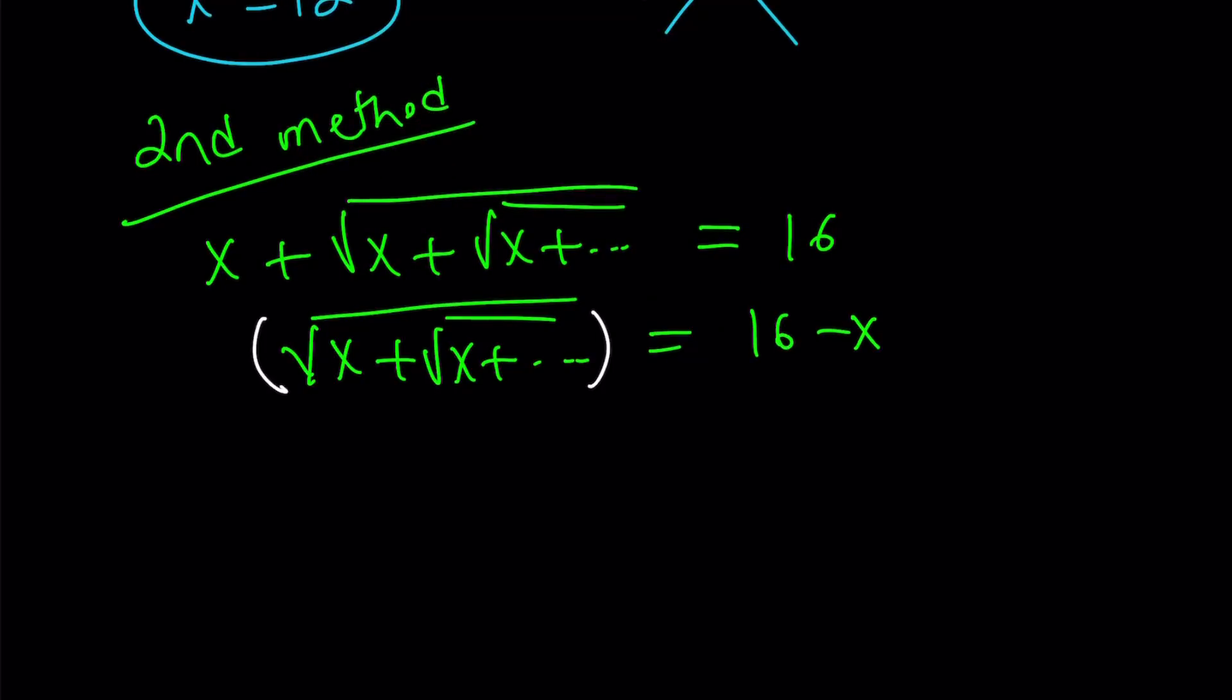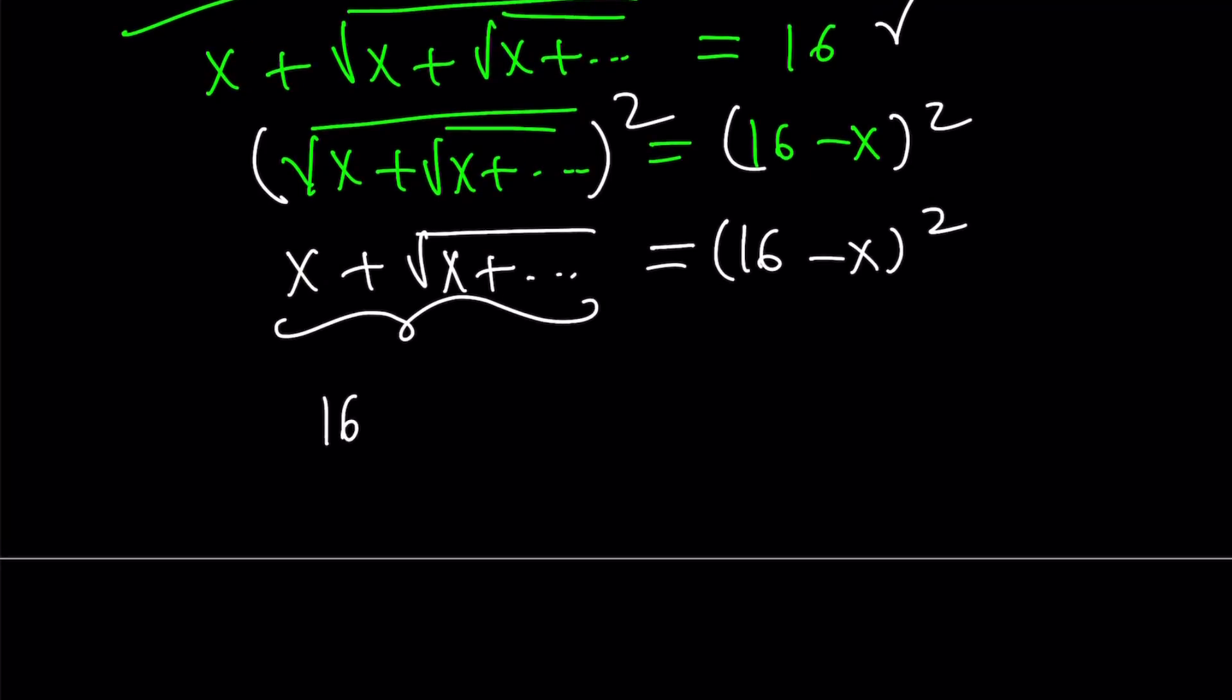If you square both sides, you're going to get rid of the outer radical. You're going to get this. The right-hand side is going to be something squared. Don't expand it because this is going to be really cool. Notice that our original expression is actually equivalent to this, which is 16. Great. We don't really have to work it out completely. We can just set this quadratic to 16. As you know, there are two solutions.